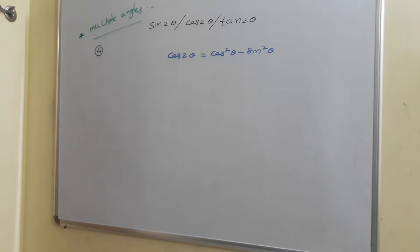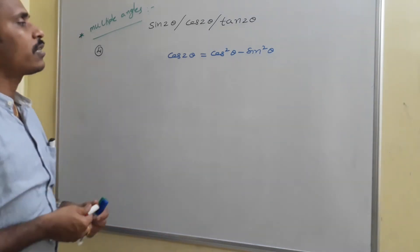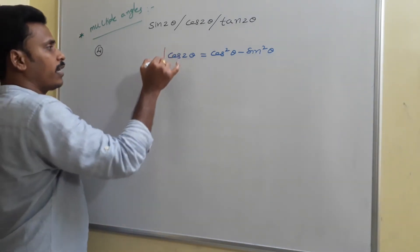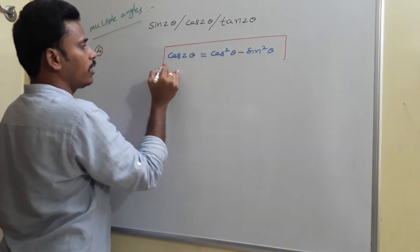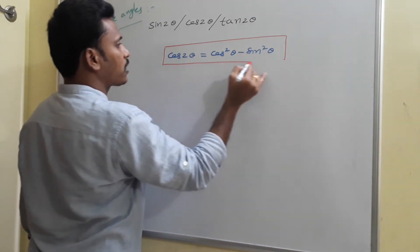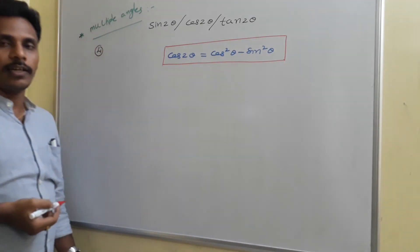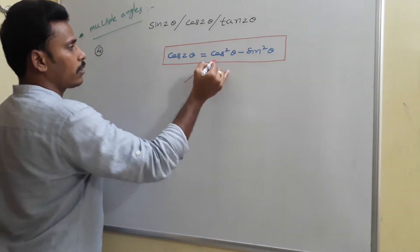Just have a look at all three formulas together. Sine 2 theta is 2 sine theta cos theta. Cos 2 theta is cos squared theta minus sine squared theta. And tan 2 theta is 2 tan theta divided by 1 minus tan squared theta.